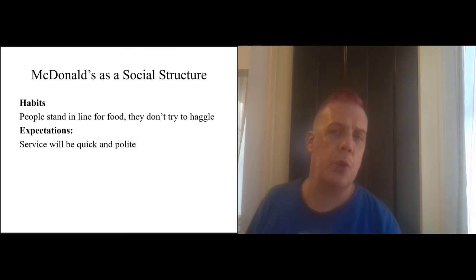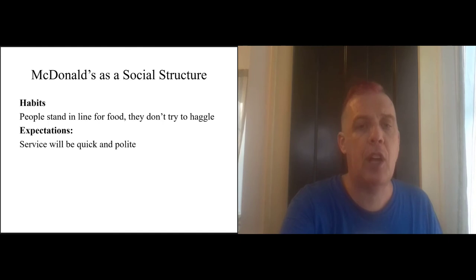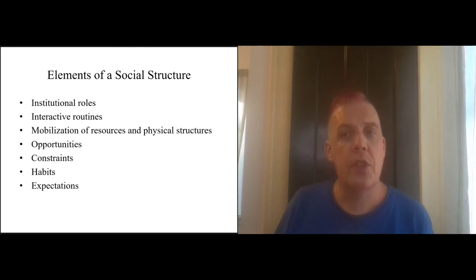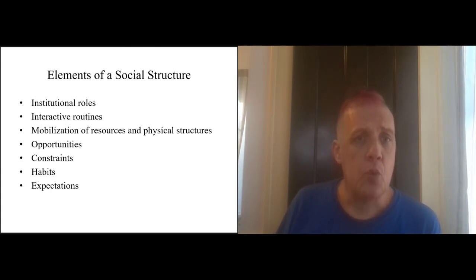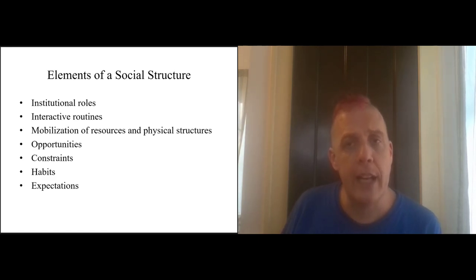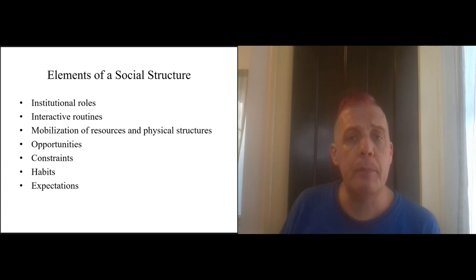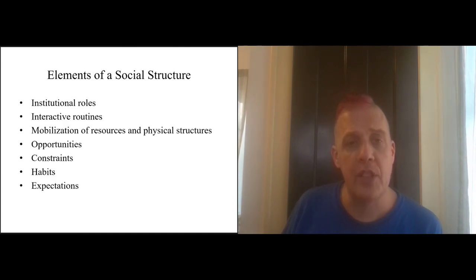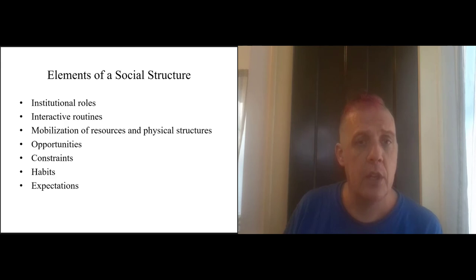Those are all the parts of a social structure, and we can apply this to other kinds of social structures — roles, routines, resources, opportunities, constraints, habits, and expectations. The next exercise asks you to think about Lorain County Community College as a social structure. You should be able to analyze what happens there the same way you analyzed McDonald's: there are going to be institutional roles, routines, and resources at this school. That's the next exercise you need to do.